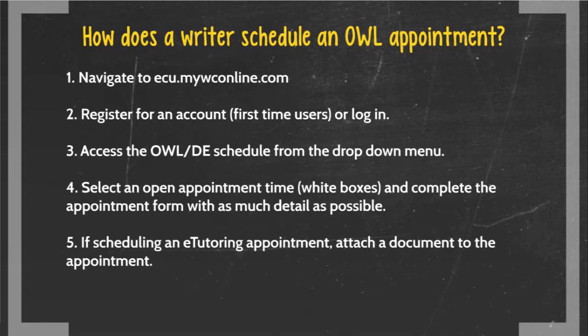To make an appointment, go to www.ecu.mywconline.com. Log in, or if you're new to the Writing Center, register to create an account. Once you log in, you will see a displayed schedule for the week, and next to the month and the day, there is a toggle menu where you can select OWL DE instead of Joiner.